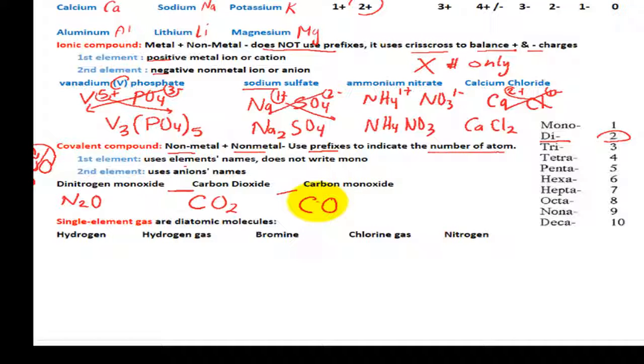And lastly, we have another type of substance. It is called single element gas as diatomic molecule. Think of the prefix di. That means there are 2 atoms molecules.